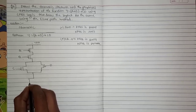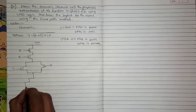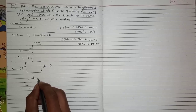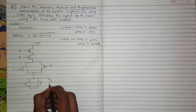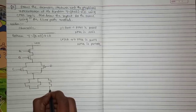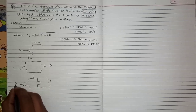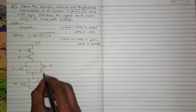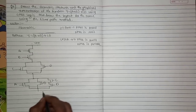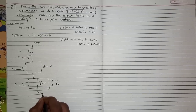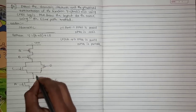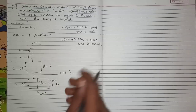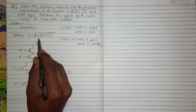Next is the pull-down network, which is the opposite of the pull-up network. This is C and this is D. The pull-down network is connected to the ground. In between the pull-up network and the pull-down network there exists the output, which is Y. This is the schematic of the equation y = (A+B+C·D)̄.